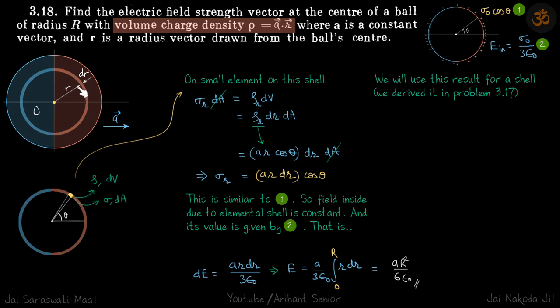So at a distance r, we are writing sigma r and rho r into dV. So dV is dr into dA, the thickness is dr and area is dA, so for that small cylinder, volume will be dr into dA and rho r I can write as a r cos theta.